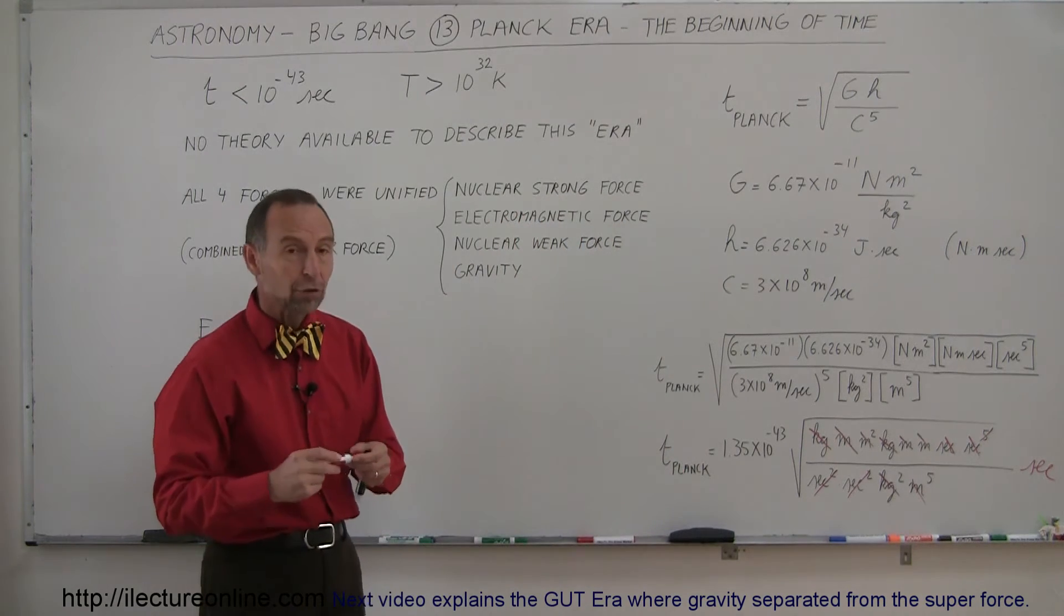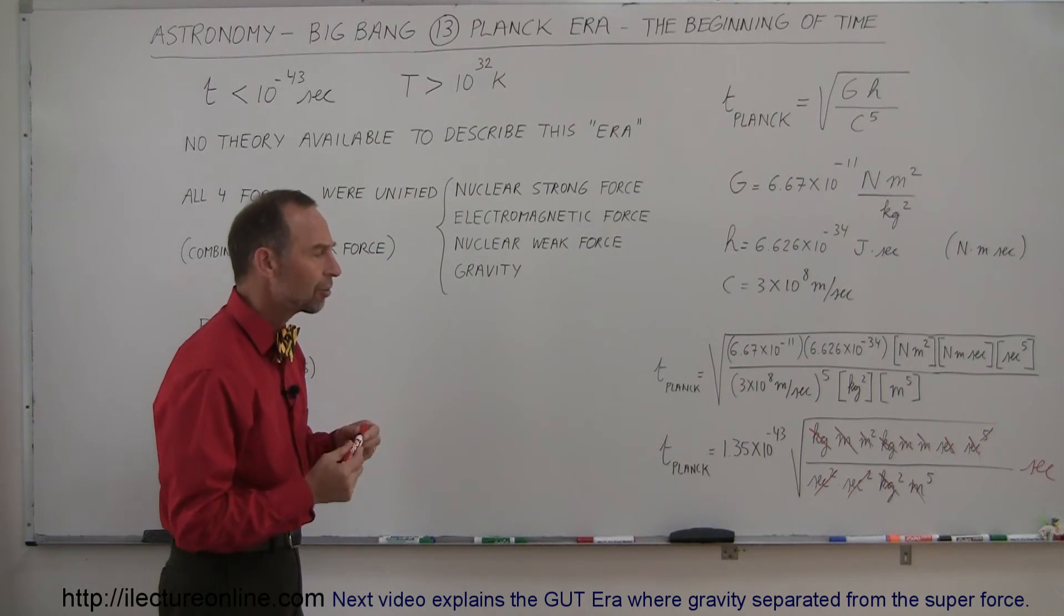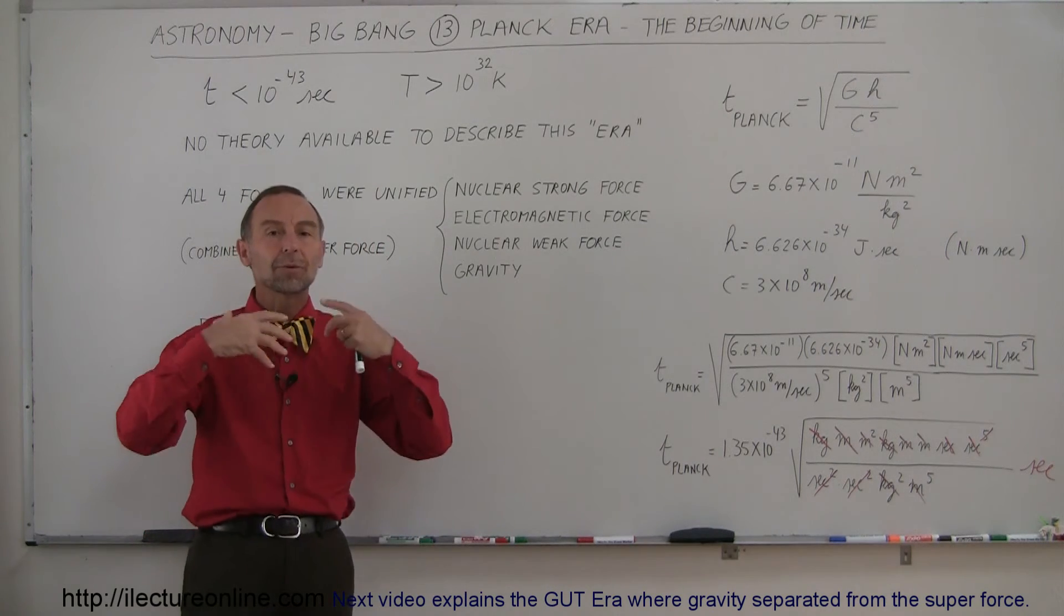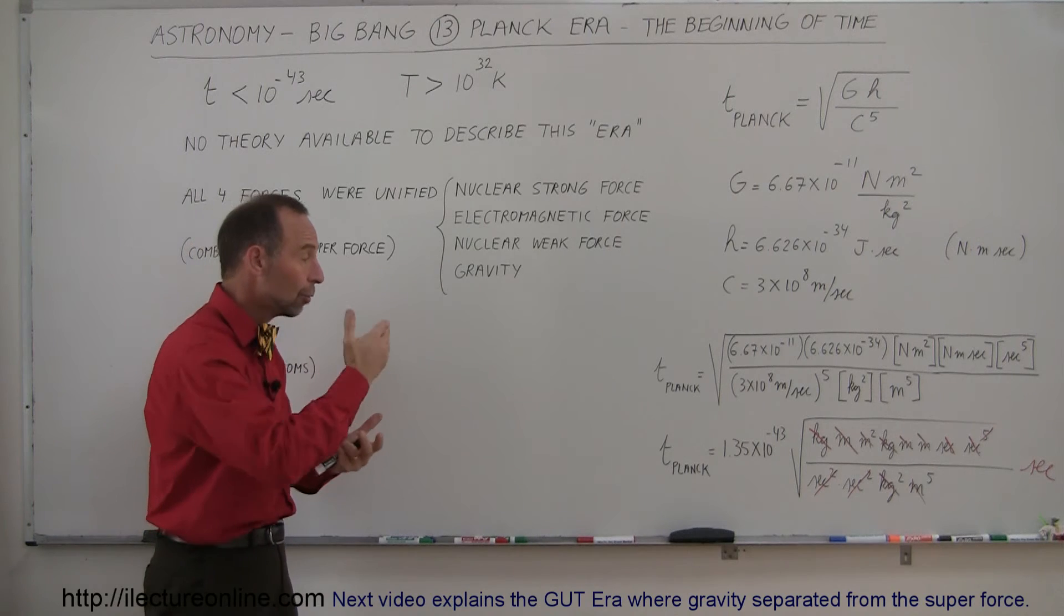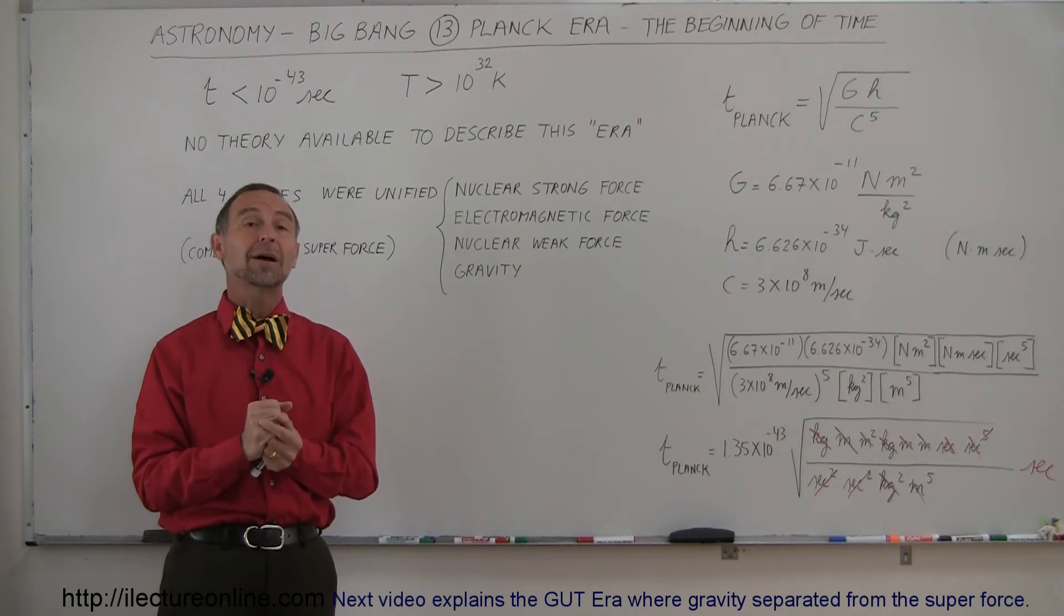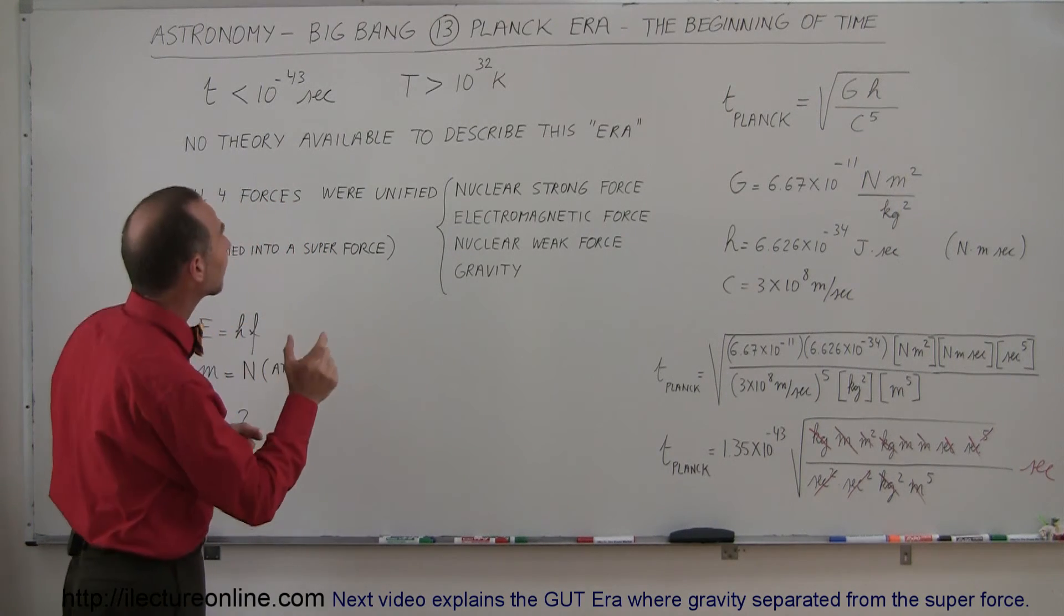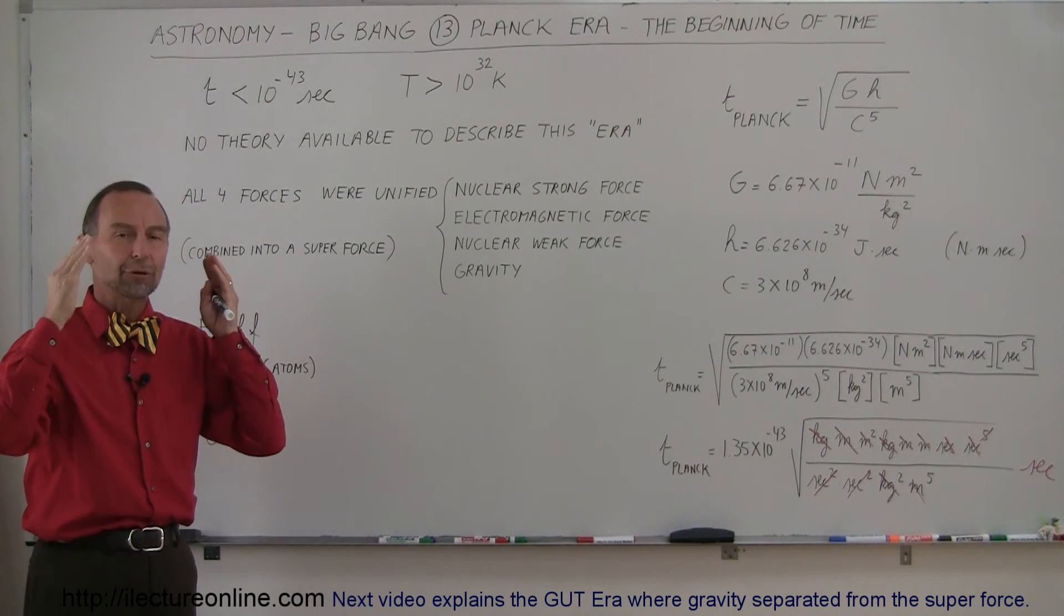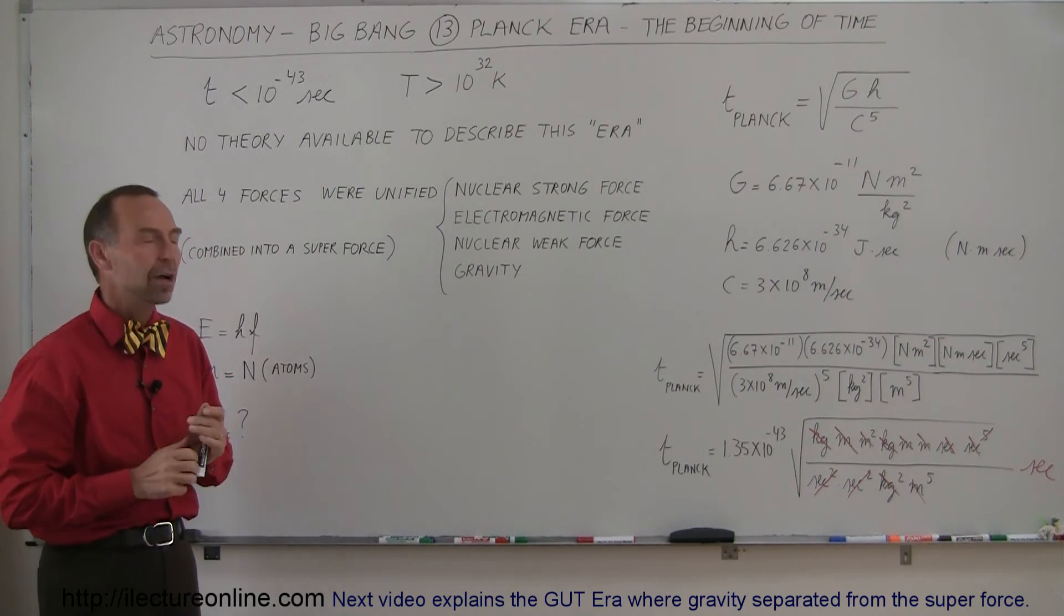And so you can see here that this is then considered the smallest unit of time possible in the universe. So they said that the universe must have sprang into being at the time T equals 1.35 times 10 to the minus 43 seconds. And they call that time the Planck era, the very beginning of the universe, when the first unit of time clicked off the clock of the universe.